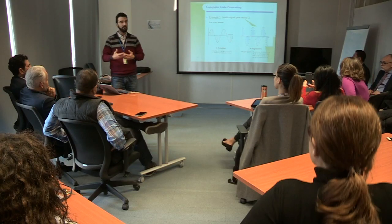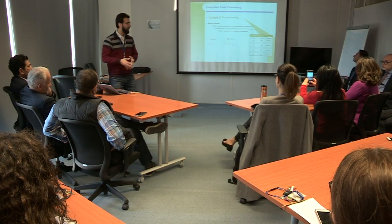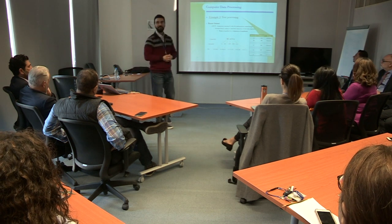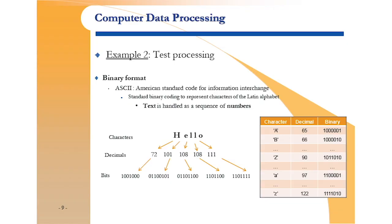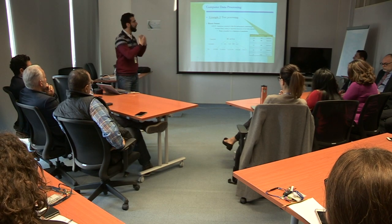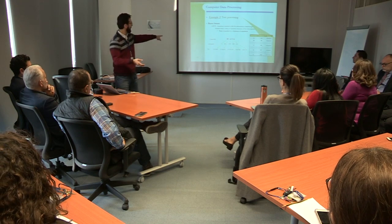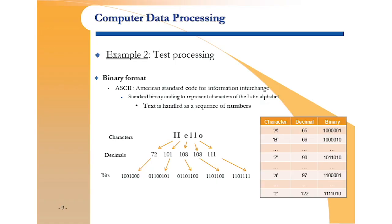From that point, the computer handles things — it only deals with numbers. The same applies to text: when you type a word on the keyboard, the computer doesn't understand it as a word but as a bunch of numbers. Every letter is a number — so 'hello' for me is, for the computer, 01100000 for the H, then something else for the E, and so forth.